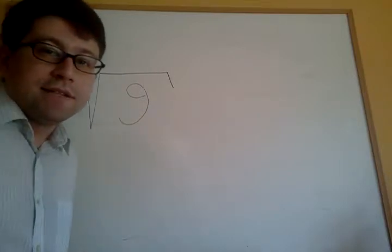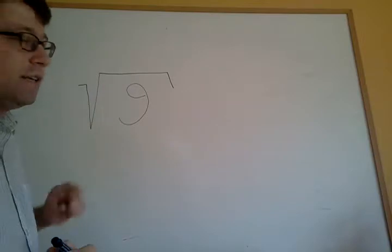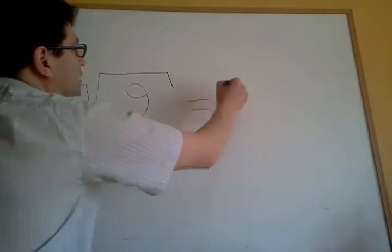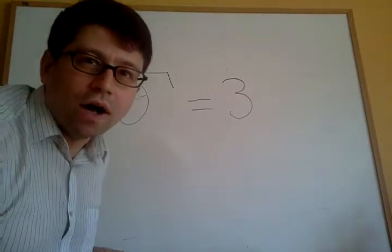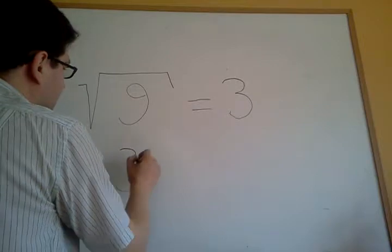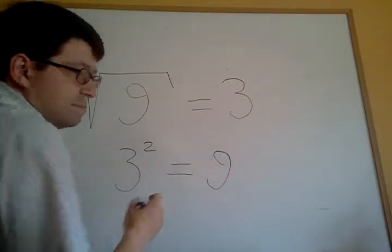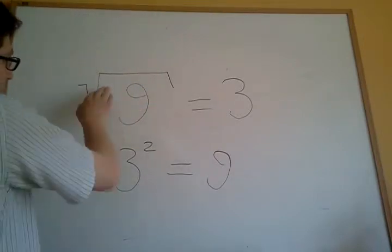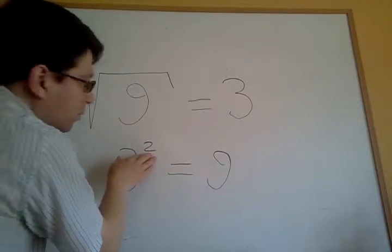This is a radical. Square root of 9 equals how much? 3. Why? Because 3 squared equals 9. That's why — square root is the opposite of square.